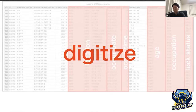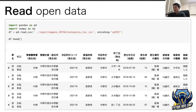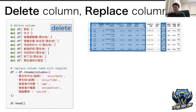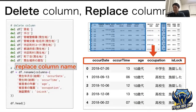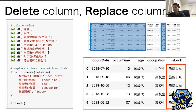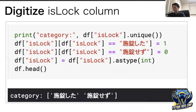I use Jupyter Notebook to digitize the open data. First, read the open data and drop columns not used this time. Since it is difficult to program with Japanese column names, I replace them with English names. Next, I digitize the lock column. I check the category values: one value means locked and another means not locked. I replace locked with 1 and not locked with 0.